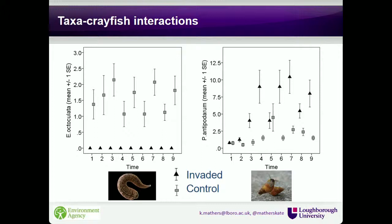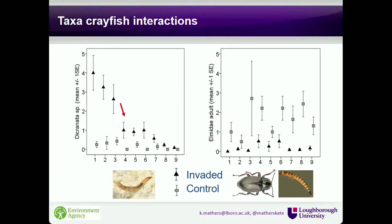Looking at another slow-moving taxon, Dichronota adiptera, it was found in higher abundances at the invaded site during sampling sets one to three but dropped off during set four when crayfish became active. This highlights the need to consider timing of sampling in order to detect a stressor — if we'd sampled only during sets one to three, we may have underestimated the effect of crayfish. We need to incorporate sampling time periods in association with life histories to fully understand what effect a stressor has.